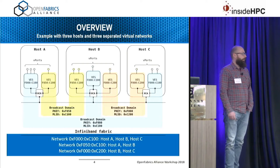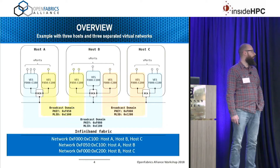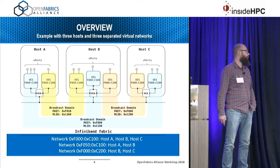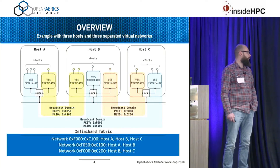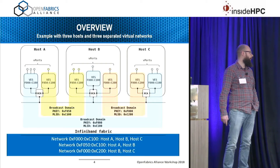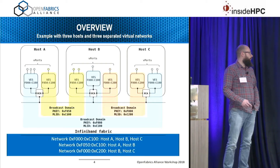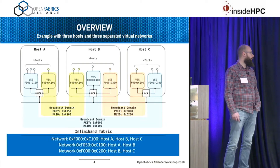Let's have a high-level overview. This is an example with three hosts and three virtual networks: one virtual network connects all three hosts, and two others connect only two hosts each. Each network is defined at the InfiniBand level by the partition key and multicast LID, so each host connected to a particular network or broadcast domain has a virtual Ethernet switch (VES) instance on it.